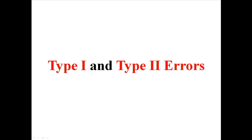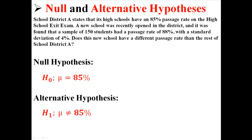Before I start talking about type 1 and type 2 errors, I quickly want to go over my example from the last lecture about null and alternative hypotheses. School District A states that its high schools have an 85% passage rate on the high school exit exam. A new school was recently opened in the district, and it was found that a sample of 150 students had a passage rate of 88%, with a standard deviation of 4%. Does this new school have a different passage rate than the rest of School District A?